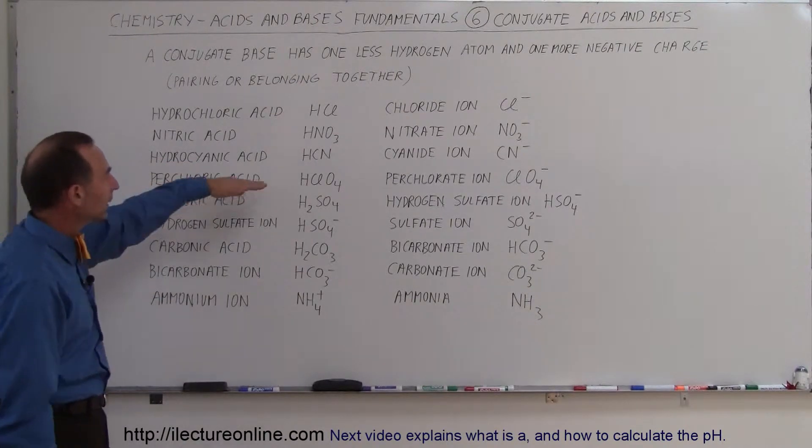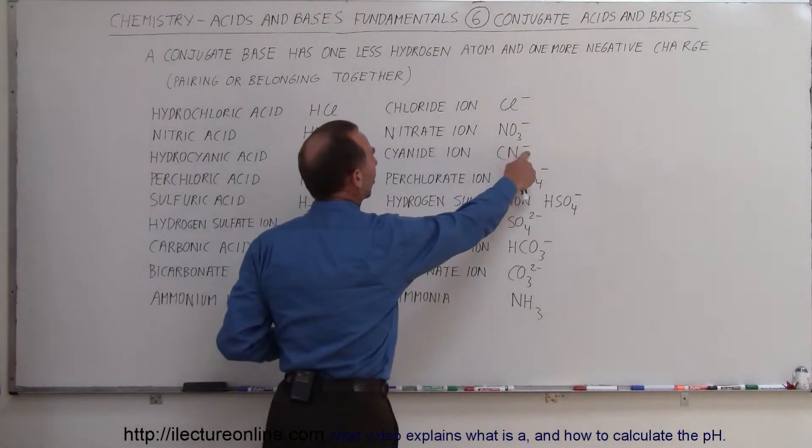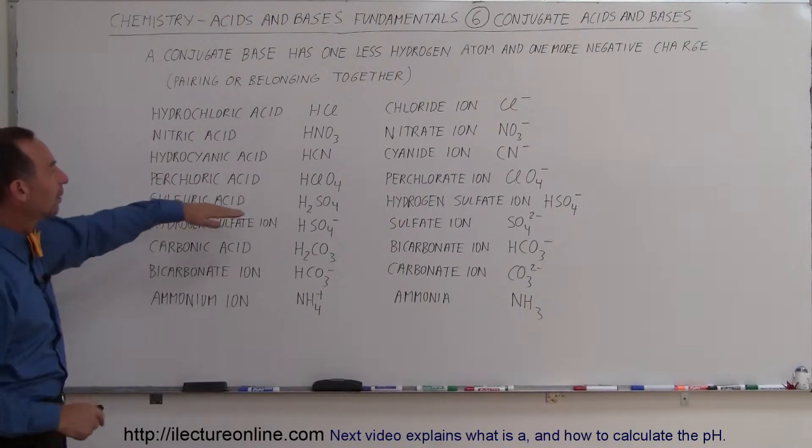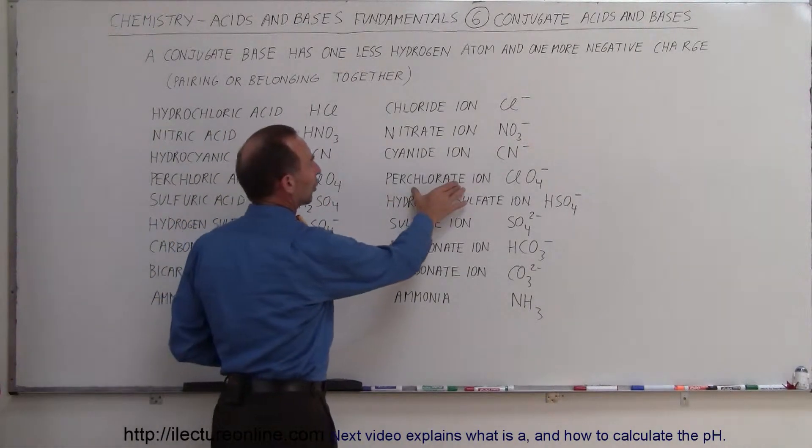Hydrocyanic acid, HCN, takes the H away, end up with one more negative charge, and so now we have the cyanide ion. For perchloric acid, we have HClO4, so we take the hydrogen away, we end up with the perchlorate ion.